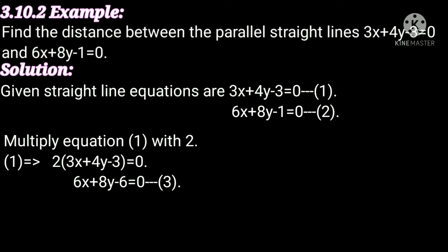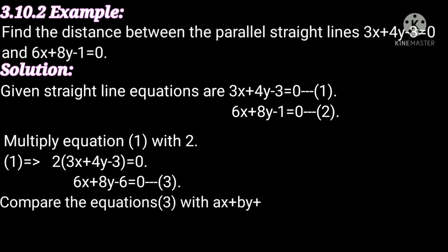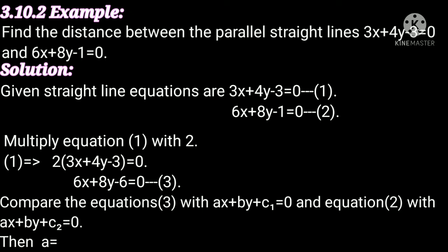Finding the distance between the parallel lines 2 and 3 is equivalent to finding the distance between lines 1 and 2. Comparing equation 3 with ax plus by plus c1 equal to 0 and equation 2 with ax plus by plus c2 equal to 0: a equal to 6, b equal to 8, c1 equal to minus 6, and c2 equal to minus 1.